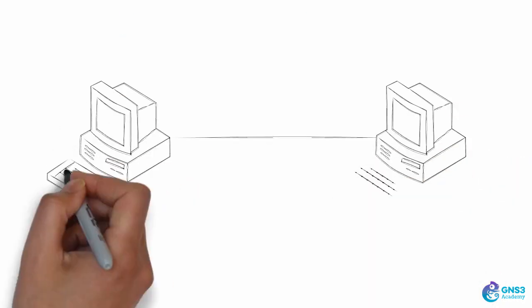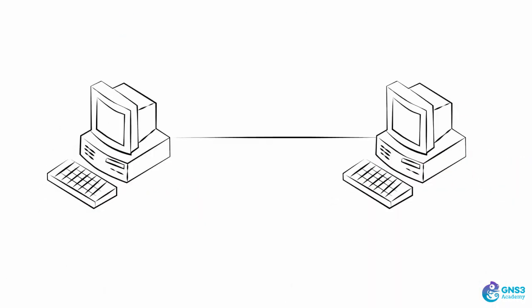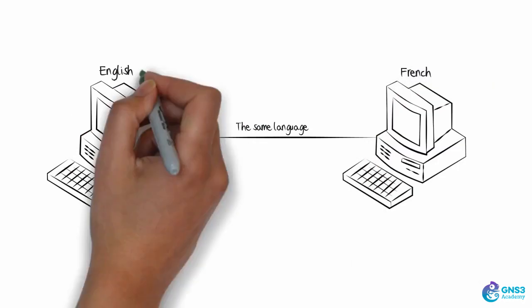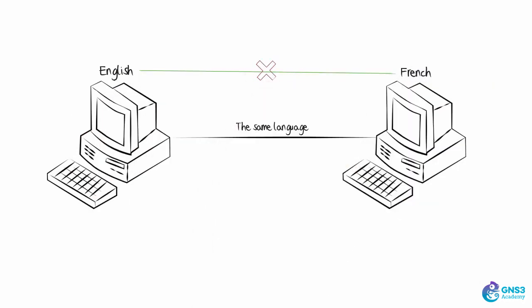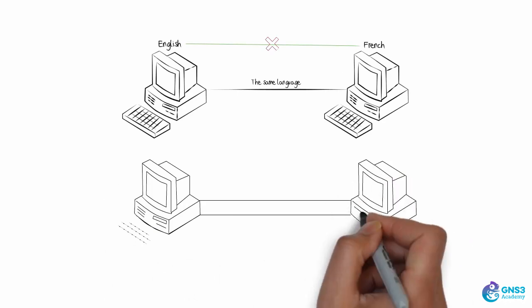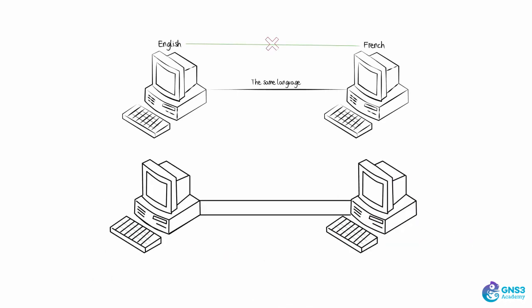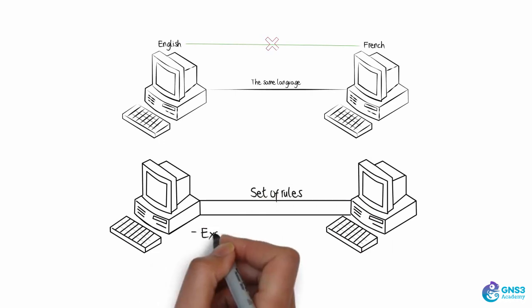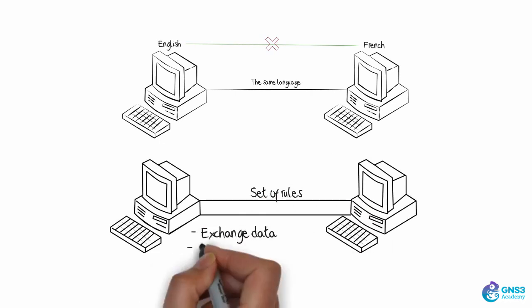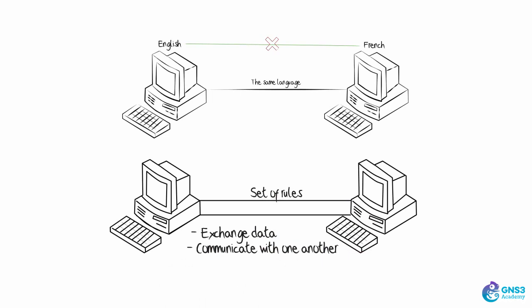In order for two computers to talk to each other, they must be speaking the same language. If I only speak English and you only speak French, we're not going to communicate effectively. In the same way, when two computers communicate with one another, there needs to be a set of rules governing how those computers exchange data and effectively communicate with one another.